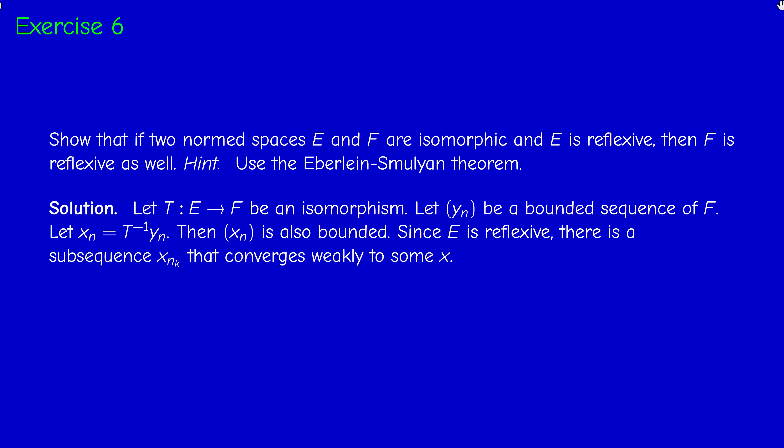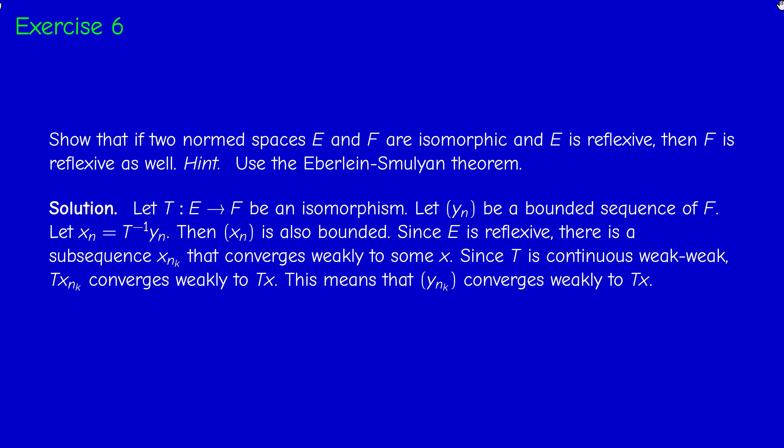Since T is bounded and linear, it is continuous weak-to-weak. So it transforms weakly convergent sequences into weakly convergent sequences. Therefore, T of Xn_k converges weakly to Tx, and therefore Yn_k converges weakly to Tx.